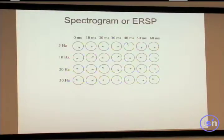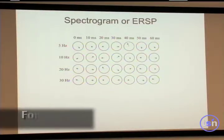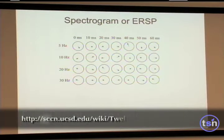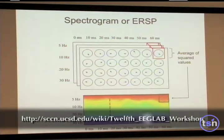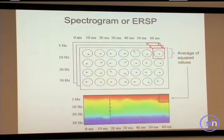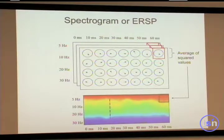We don't have to average windows. We can get time-frequency decompositions for all time-frequency points, and we can do that for each single trial. So this was one trial — at zero milliseconds is the stimulus presentation, 10 milliseconds after stimulus, 20 milliseconds after — and here I have three trials. Now I'm going to do the averaging across the trials.